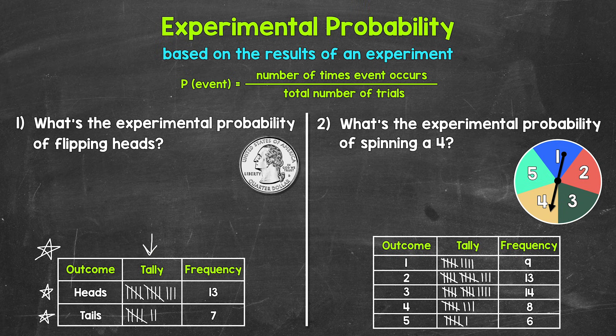Then we have a tally column right here, where data was collected as the coin was flipped. Each time we flip the coin, that's called a trial. So after each trial, a tally was made. And then our last column to the right here is the frequency column, where everything was counted up at the end. So we had 13 heads and seven tails. That gives us 20 total trials, 13 plus seven. So 20 total flips.